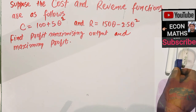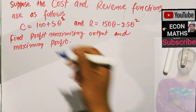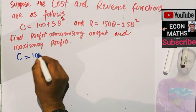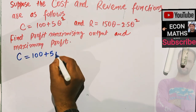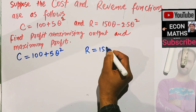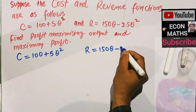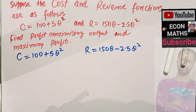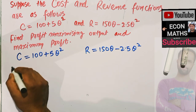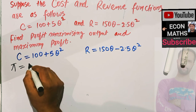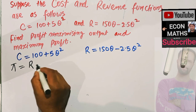So what we are given: the cost function is 100 plus 5q squared and the revenue function is given as 150q minus 2.5q squared. The first step is to find out the profit function. Let's denote pi as profit. Profit is simply equal to revenue minus cost.